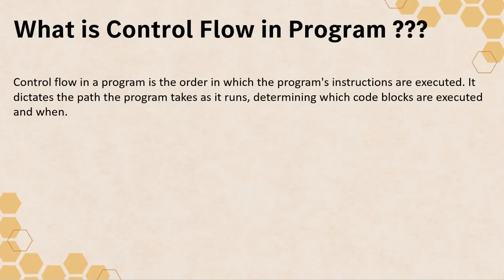Basically, control flow in a program is the order in which the program's instructions are executed. As you all know, a program is a set of instructions with several lines, and control flow is the order in which these instructions get executed. It dictates the path the program takes as it runs, determining which code blocks are executed and when.